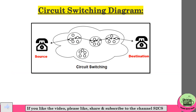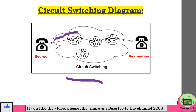See the example of the circuit switching diagram here. I have taken the example of a caller and callee — caller is the source and callee is the destination. A dedicated path has been established between them to transfer the data.